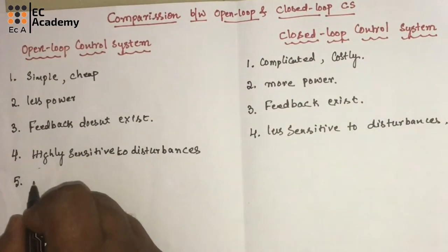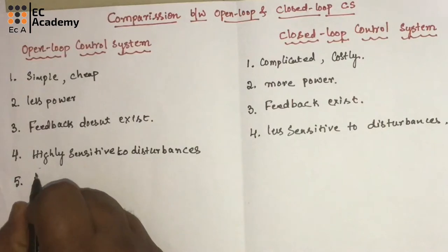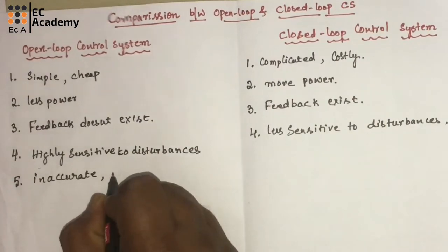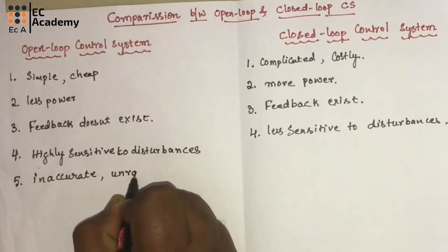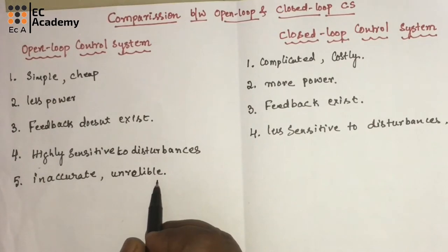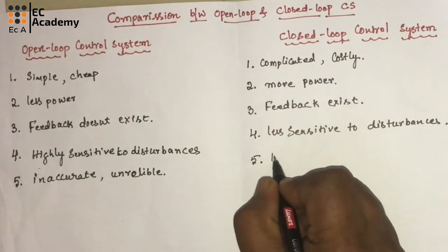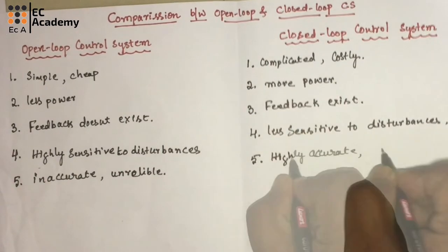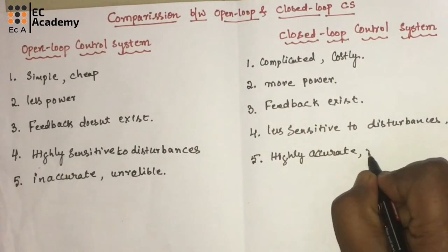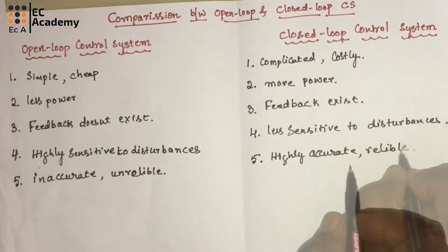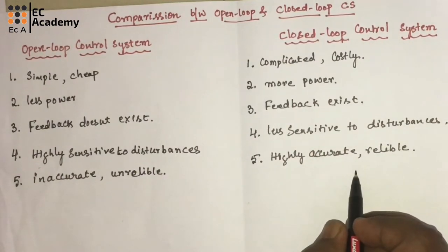The open loop control systems are inaccurate and unreliable because output cannot be controlled. Closed loop control systems are highly accurate and reliable because output can be controlled and measured in the closed loop control system.